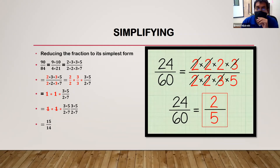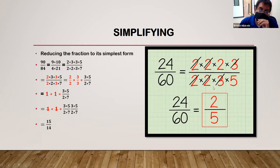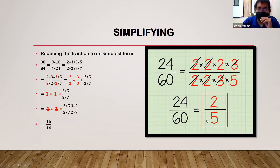In another example, 24 over 60 breaks down into 2 times 2 times 2 times 3 over 2 times 2 times 3 times 5. The first set of twos, the second set of twos, and the set of threes are all cancelled out, leaving you with 2 and 5. So 24 over 60 simplified equals two-fifths.